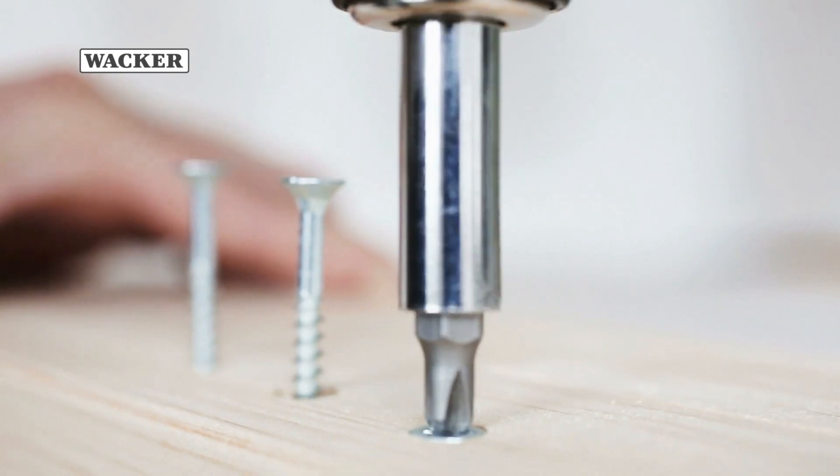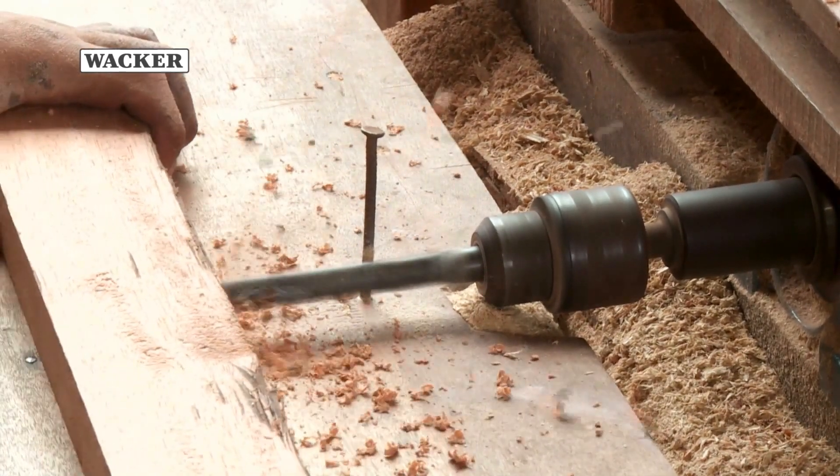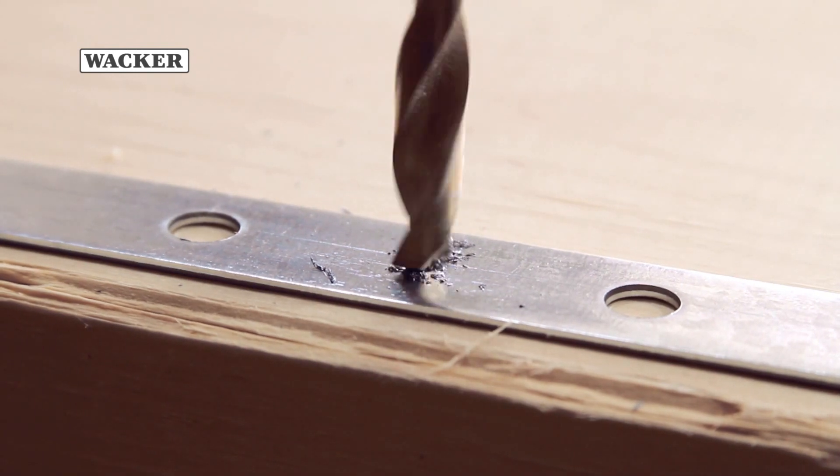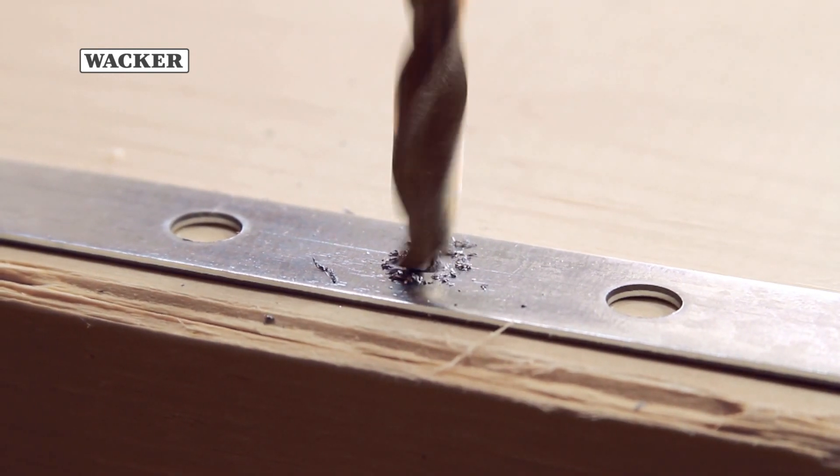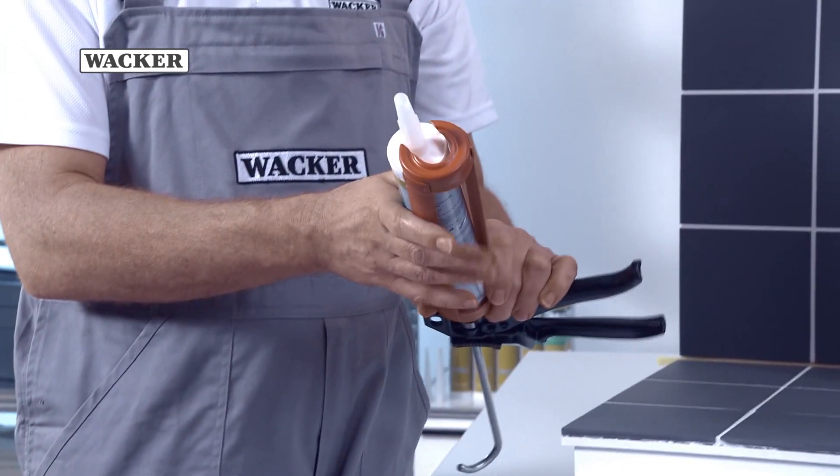Nowadays, adhesives are replacing traditional fasteners for joining two components. Bonding imposes less strain on materials than does bolting or riveting. And bonding is quick, a significant issue in many applications.